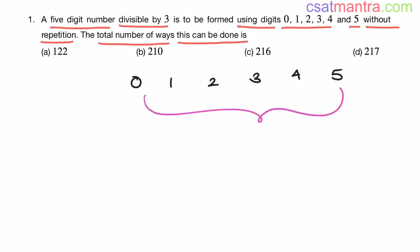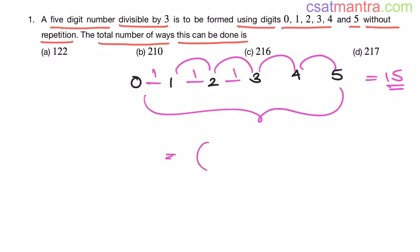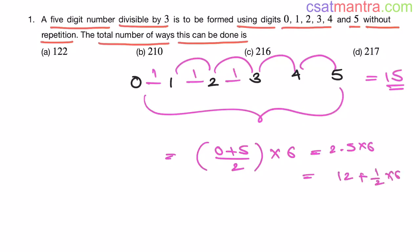Now let's find the sum of these six numbers: 1+2=3, 3+3=6, 6+4=10, 10+5=15. So the sum of 0,1,2,3,4,5 is 15. You can also use the arithmetic progression formula: sum = (first + last)/2 × number of terms = 2.5 × 6 = 15.